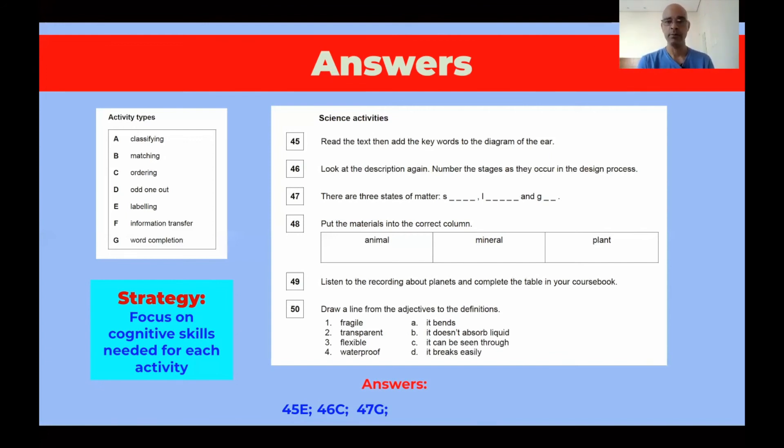Number 48, put the materials into the correct column. So we have a column for animal, a column for mineral, and a column for plant. So which materials go to the animal column, to the mineral column, to the plant column. So students are being asked to classify materials. They're being given a list of materials, or pictures of materials, or a bunch of materials, concrete materials, and they have to classify them. So number 48, A.